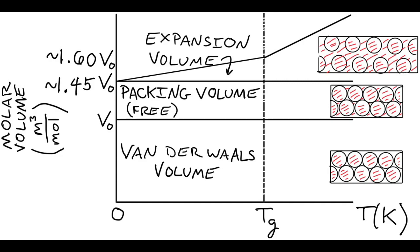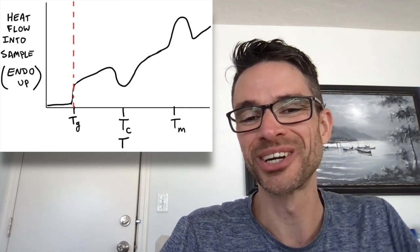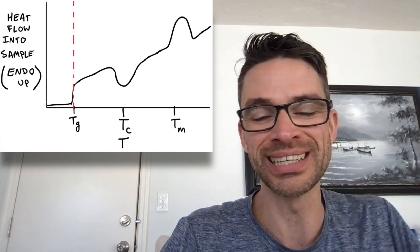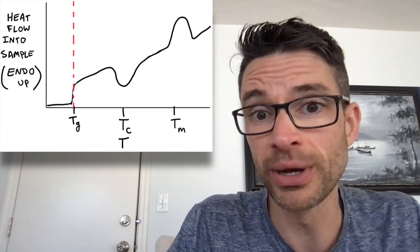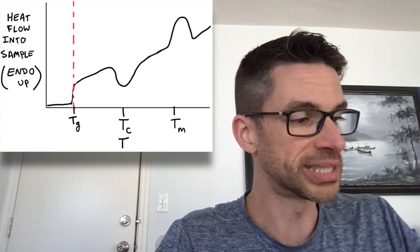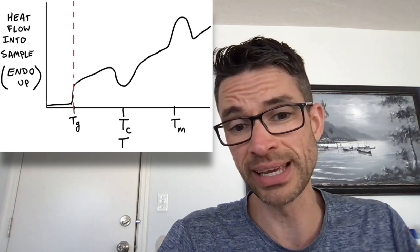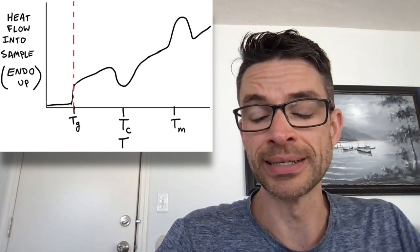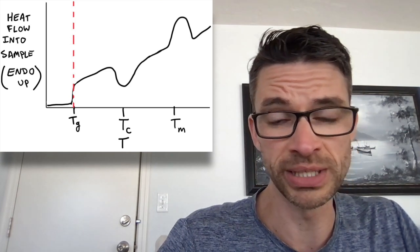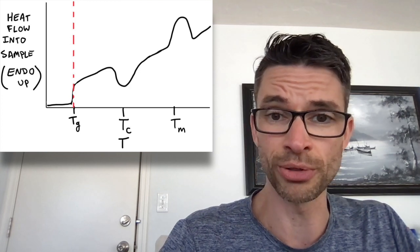One way to measure these transition temperatures is differential scanning calorimetry, or DSC. A plot shows the first transition at the glass transition temperature, which appears as an increase in heat capacity — because you're freeing up modes of molecular motion so you can absorb more heat without raising the temperature much. Then at a higher temperature, the amorphous material crystallizes, and at some later temperature those crystallites melt. Crystallization is exothermic — forming bonds releases heat — while melting is endothermic, taking heat in.